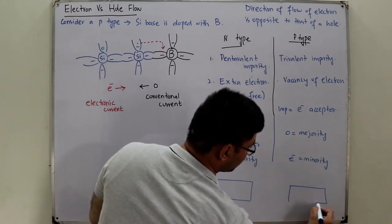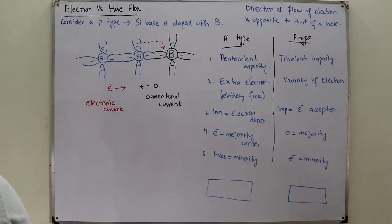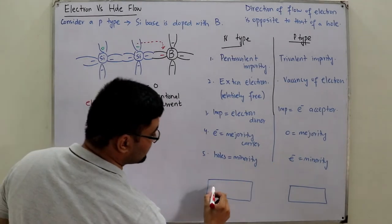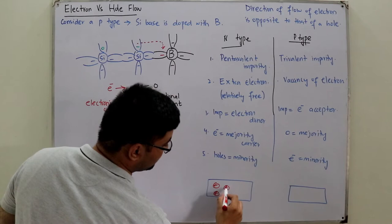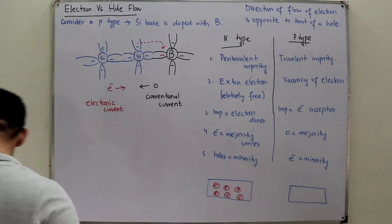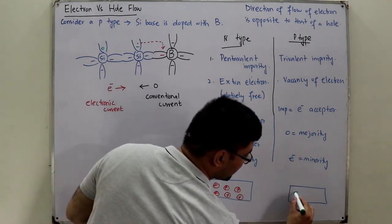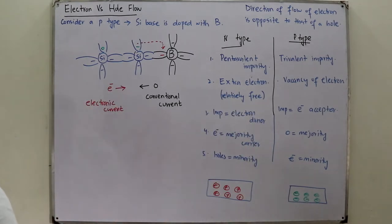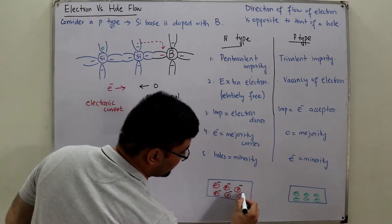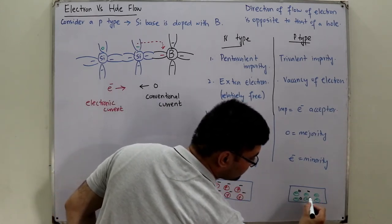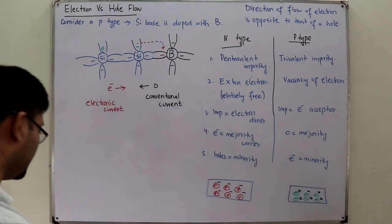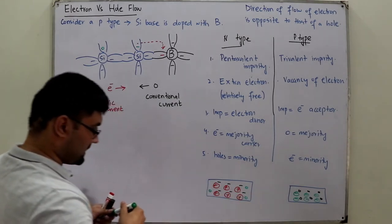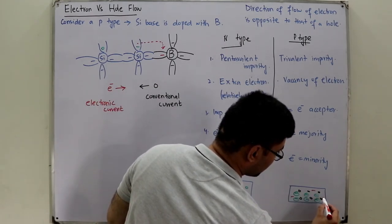Drawing the block diagram: for n-type, you have electron donor ions with an extra free electron, and the minority carriers are holes. For p-type, you have electron acceptor ions with an extra hole, and the minority carriers are electrons.